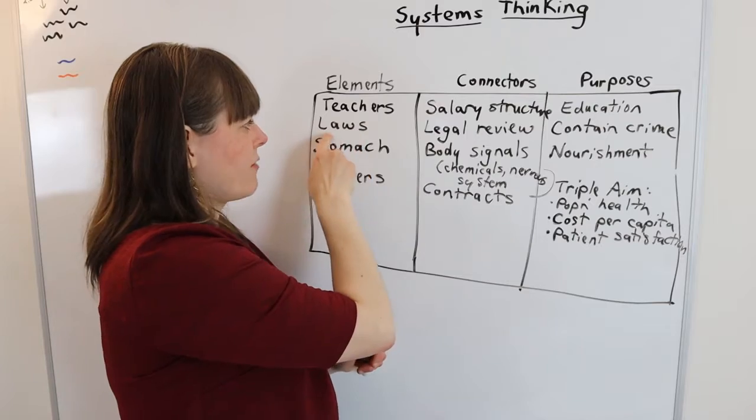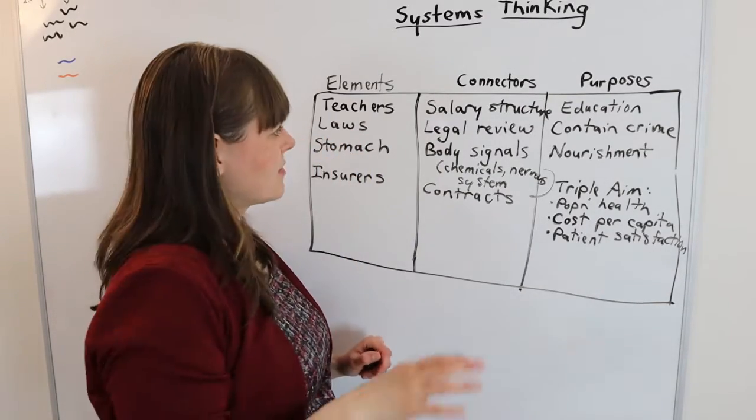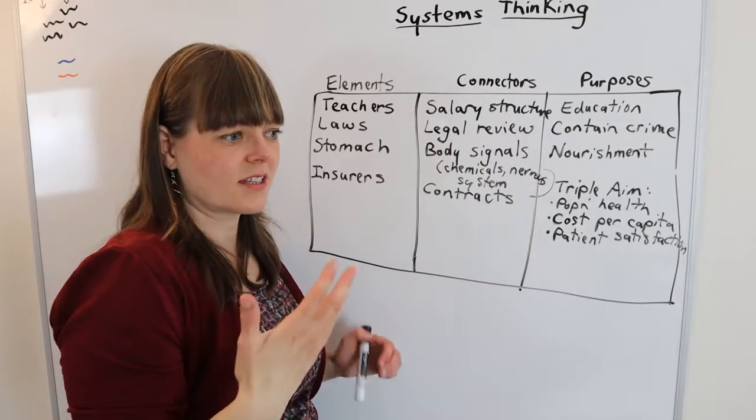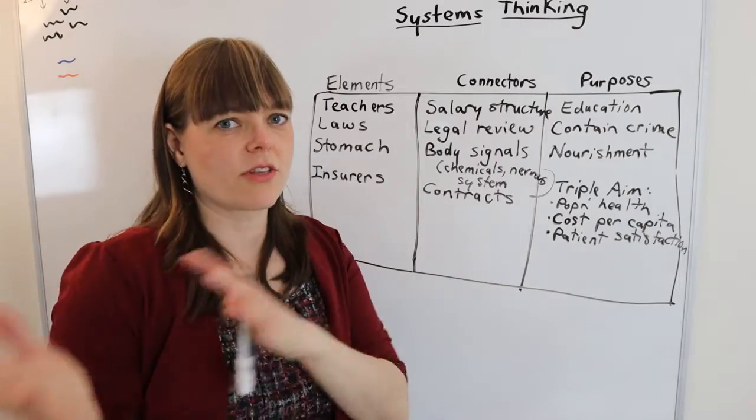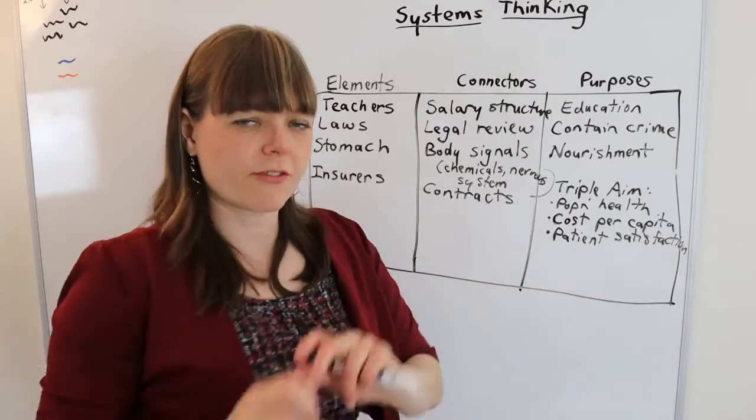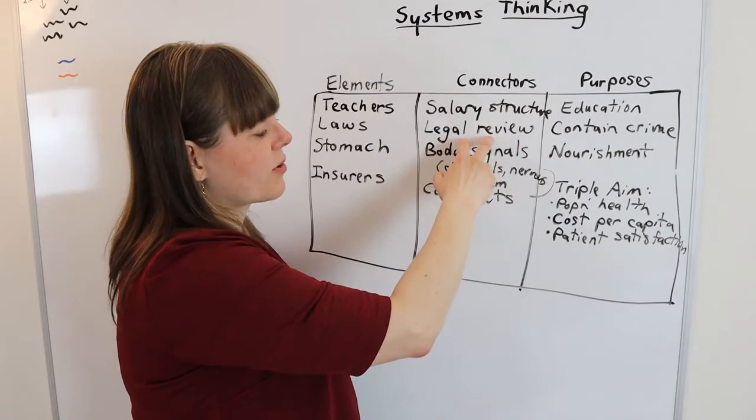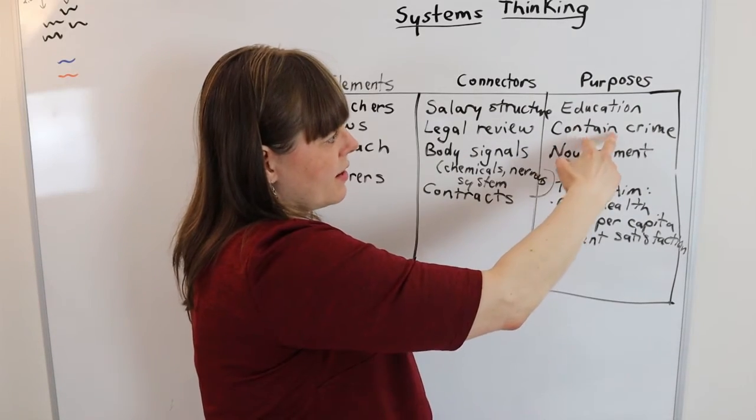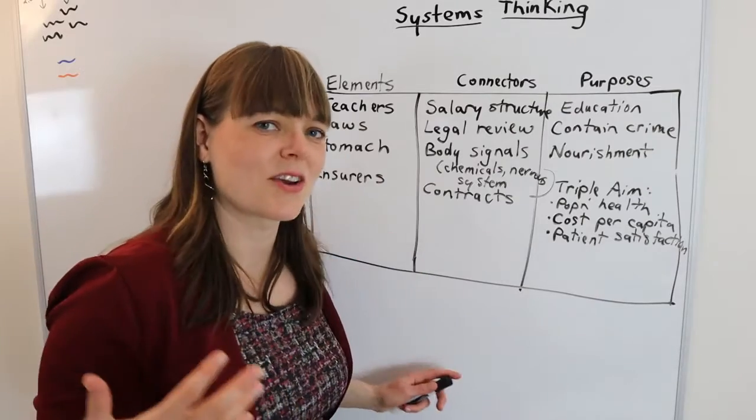For the legal system, laws are one element of that system. Of course, there's many elements of a system that complex. Legal review, for example, the process that lawyers go through when they try to enact the laws where they might compare and pull from different laws and review precedent, all of that might be a connector within the system that could create a dynamic effect. And the purpose of the legal system might be to contain crime.